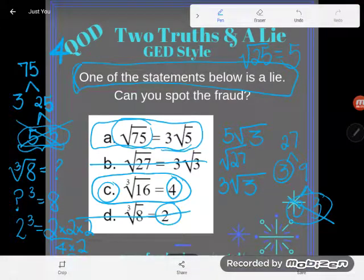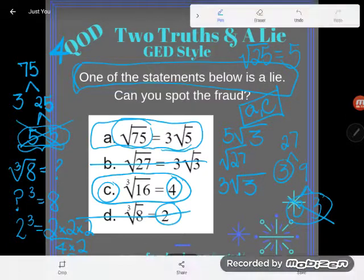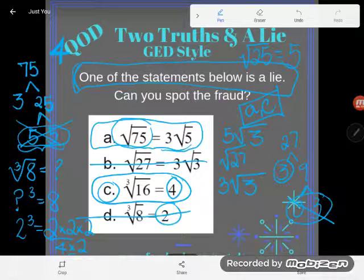So as it turns out, the lies here were both A and C, and apparently me as I wrote the directions. If you have any questions about this or any other GED math topic, feel free to drop it in the comments and I'll do my best to answer it.